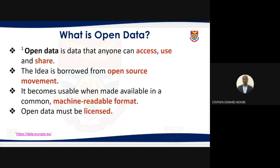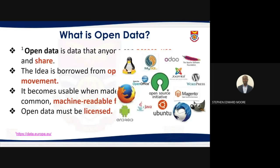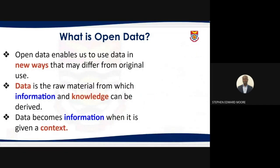Open data must be machine-readable and licensed. The fact that it is open data doesn't mean it is not licensed — every data you put out there must have a license. Examples of open source products include Joomla, WordPress, Magento, Java, and Ubuntu — anyone can use, access, share, and develop products from them. That is what open source means, and open data follows the same principle.